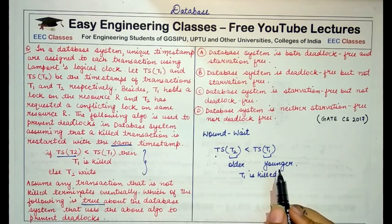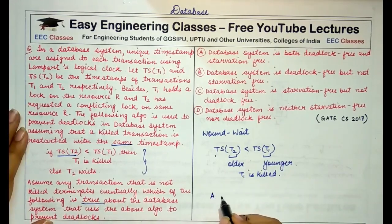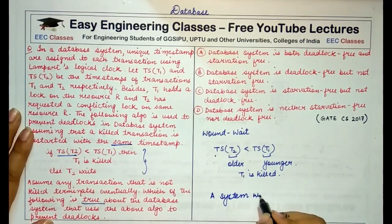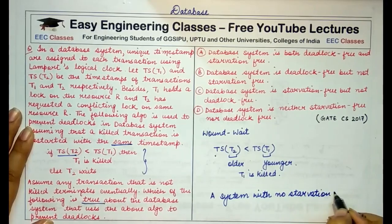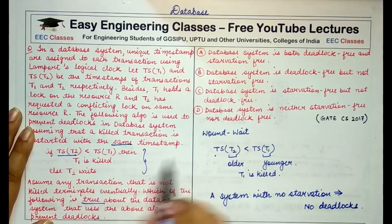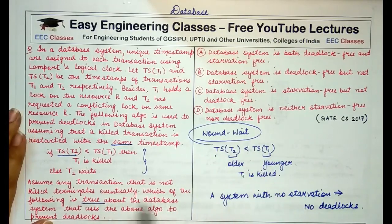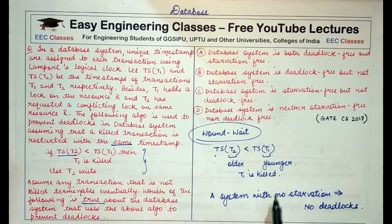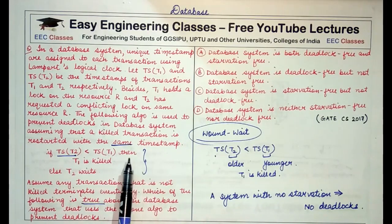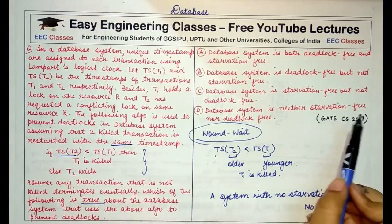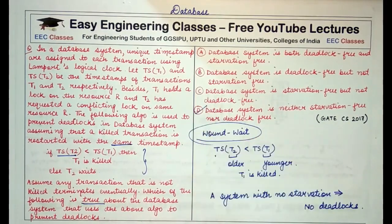T1 will eventually get hold of the resource because once T1 is killed and restarted, it will be older compared to other transactions fighting for the same resource. So T1 will never starve — any transaction that was initially killed will never starve. A system with no starvation also means no deadlock. This is a wound-wait timestamp ordering deadlock prevention mechanism, and the system will neither be deadlocked nor suffer from starvation. The correct answer is D.